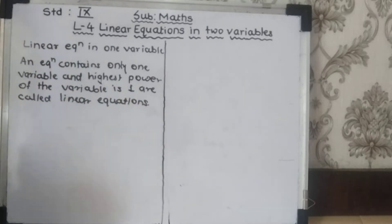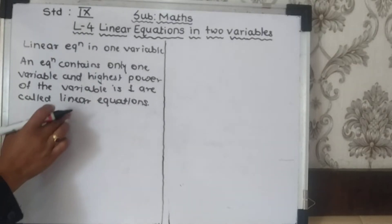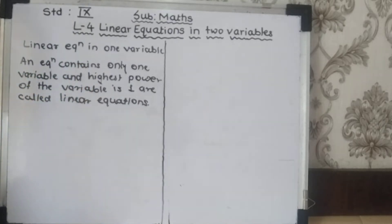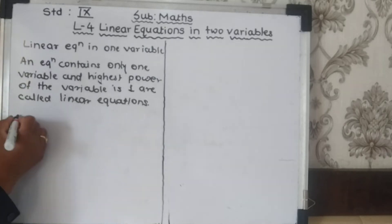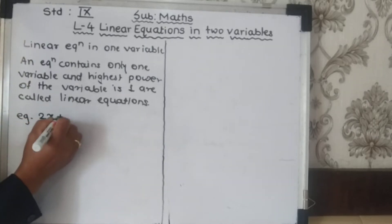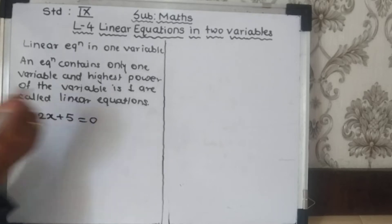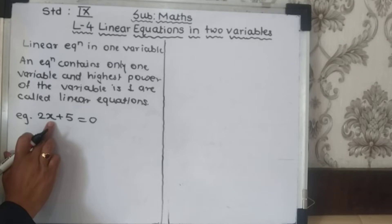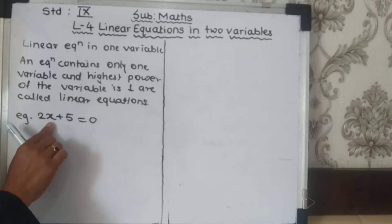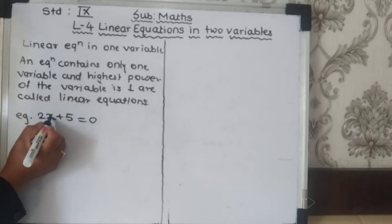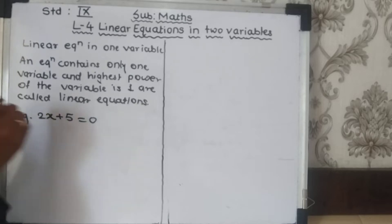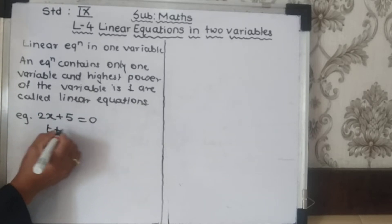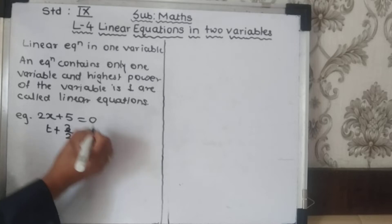Do you remember all those things? So, a linear equation in 1 variable has power 1 and only a single variable is involved. For example, we have 2x + 5 = 0. Here, how many variables are involved? Only one — that is x — and the power of x is 1. Then suppose t + 3/2 = 4. This also has t as a single variable with highest power 1.